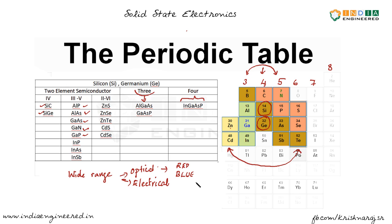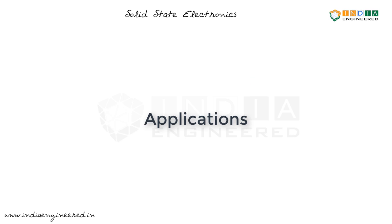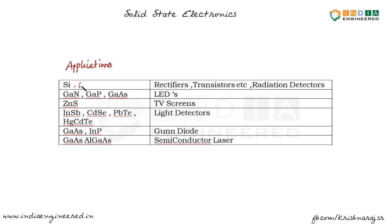We will now look at some applications. Silicon and germanium are elemental semiconductors used in making rectifiers, transistors, radiation detectors, and more. These days silicon is the most preferable material compared to germanium, for reasons we will discuss later.